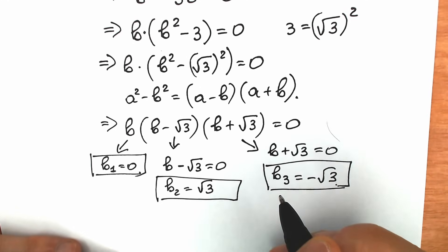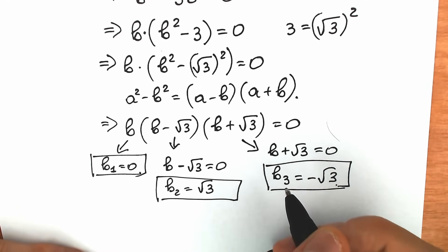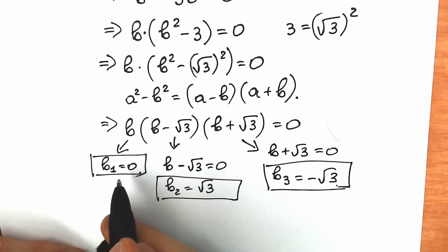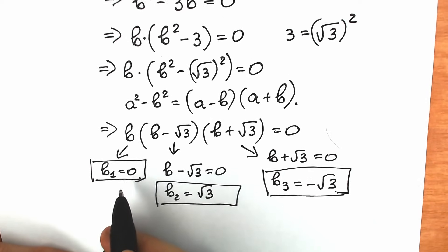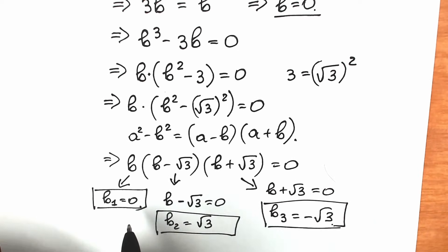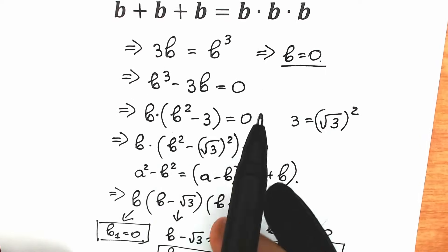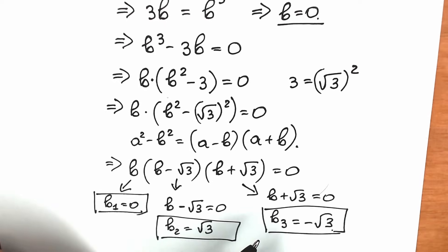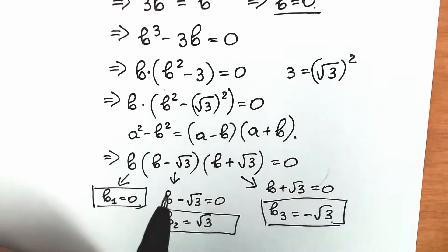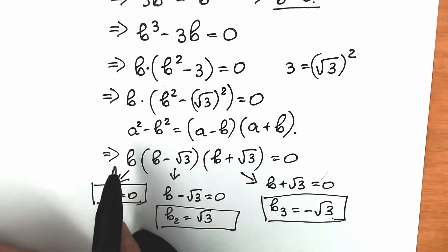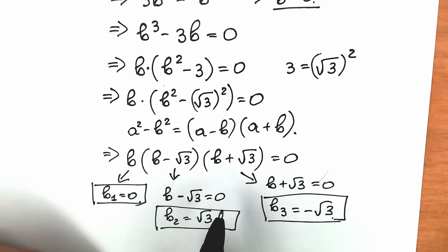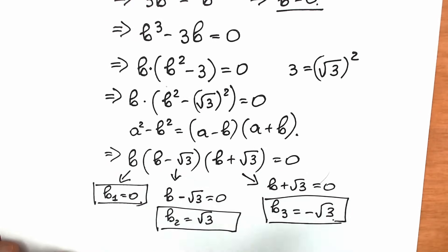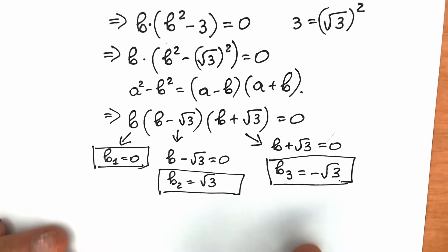As you can see, we found three roots to this question. This is a very tricky moment because a lot of students say we have only one solution, b₁ equals zero, and solve this question in just two lines. Don't forget about a full solution — we have three solutions. Let's check these solutions real quick.